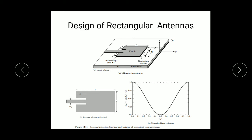You can see, in this rectangular antenna, this is the simple structure of a rectangular antenna. The top part is the patch and the bottom part is the ground, and this is the microstrip feed, which is also called the gap feeding. This is the front view of the antenna, and this curve represents the input impedance variation of the antenna according to the gap length.